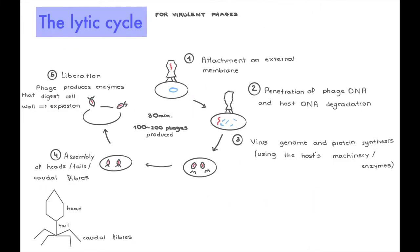All right, so let's start with the lytic cycle, and this is going to be one for virulent phages. So this means bacteriophages that are very active and not dormant at all, which we will see in the lysogenic cycle. So just as a reminder, a bacteriophage is like a virus that is going to typically attack bacteria, hence bacteria in bacteriophage.